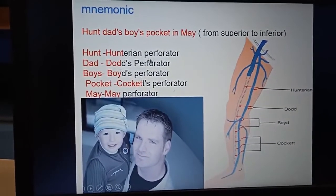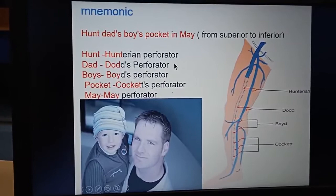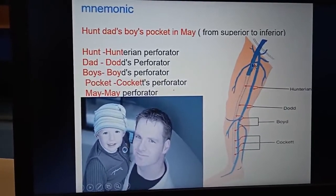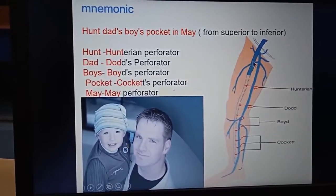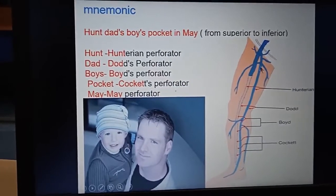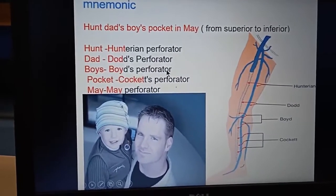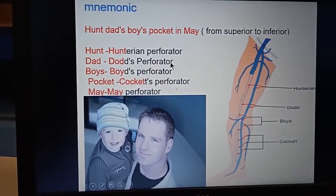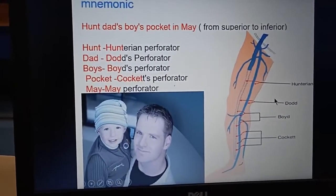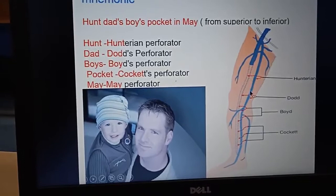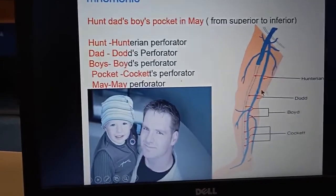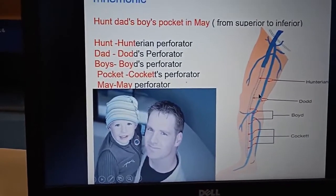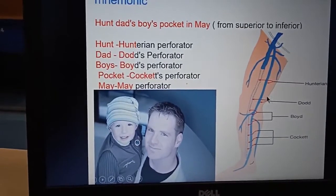First, 'Hunt' — that is the Hunterian perforator, connecting the superficial and the deep vein at the level of the adductor canal or Hunterian canal. Second, 'Dad' — that is the Dodd's perforator. Here you can see this is the Dodd's perforator situated in the lower one-third of the thigh, connecting the superficial and deep venous system.